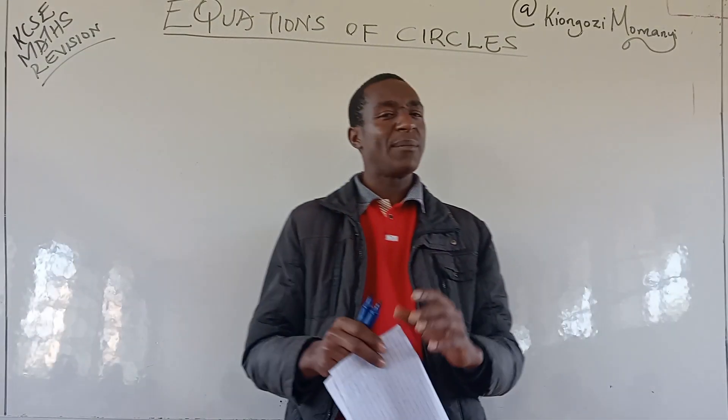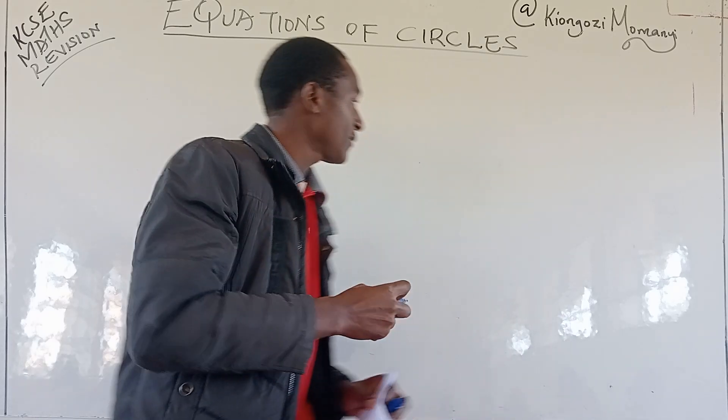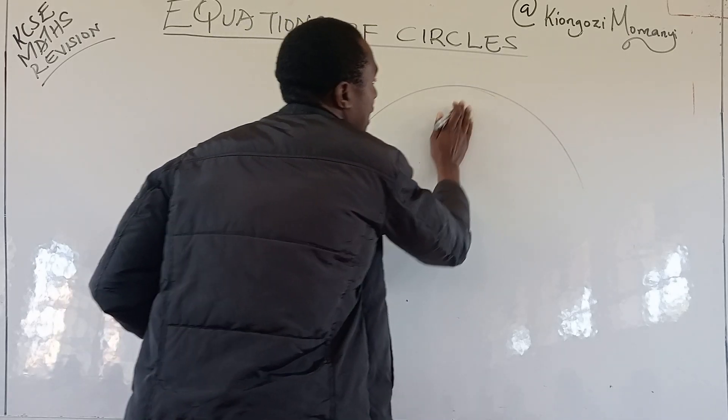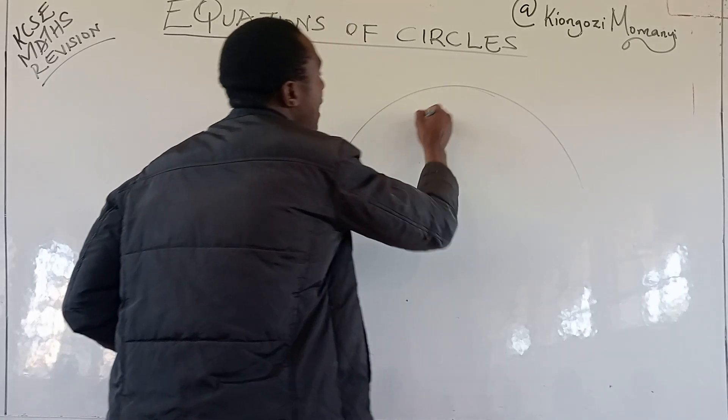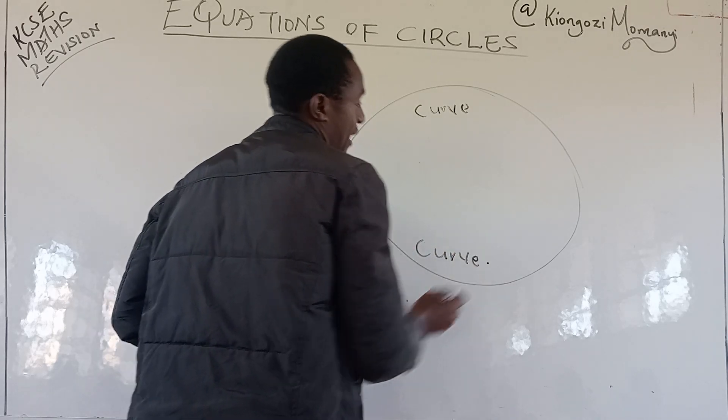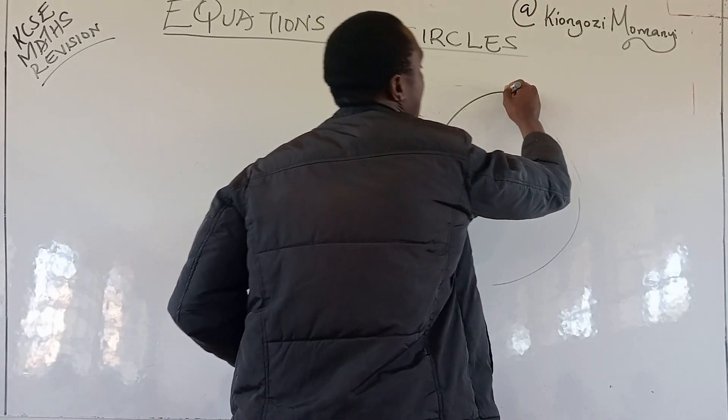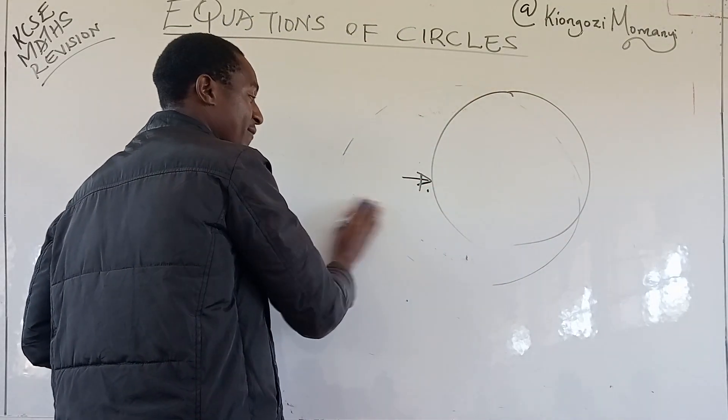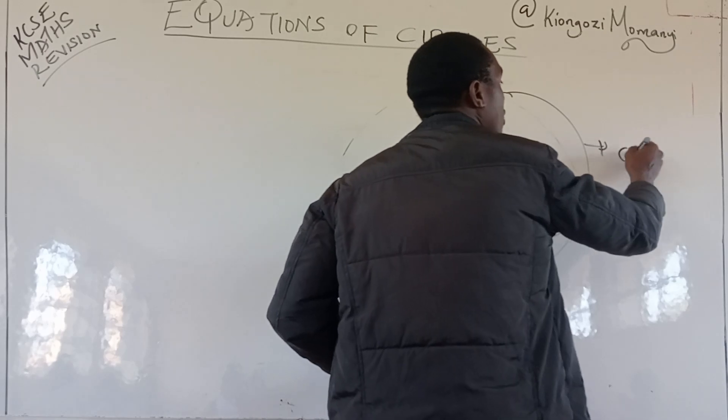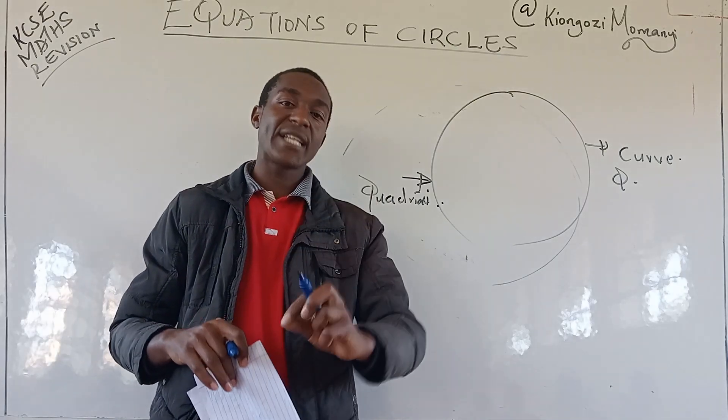I will take you through some little knowledge. Just remind you that circles are made up of two quadratic equations. So a circle can either be made of a semicircle, which is a curve, and another semicircle, which is another curve. The first one here is a curve, which is also a quadratic function, and this one is also a curve, which is a quadratic function. So circles are made up of two quadratic equations.